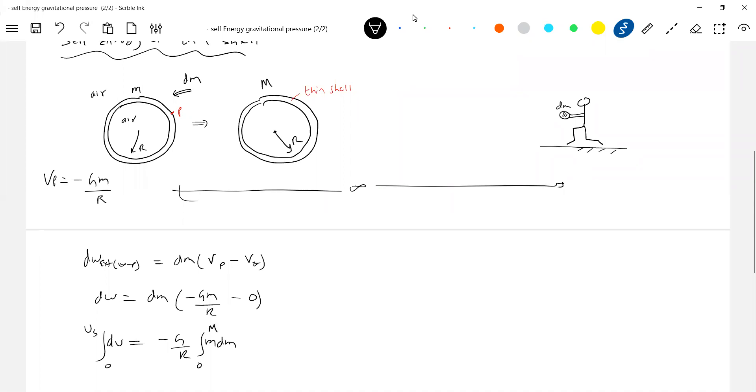So this will be minus G by R. How much mass finally? If I keep on adding mass dm, it will become from zero to capital M. Earlier there was no shell, there is no mass here. Then a thin shell of mass capital M and radius R has come. So zero to capital M. So this will become U_s is equal to minus Gm square by 2R. So this much work we should do.